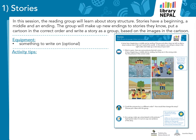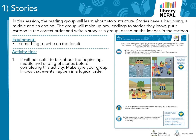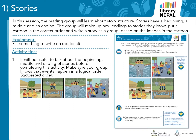Activity 1 is a pair activity. On the worksheet, there are four pictures. These pictures tell a story but they are in the wrong order. The pictures show a beginning, a middle and an ending to a story, and the pairs have to decide which is the correct order. To help your students, it will be useful to talk about the beginning, middle and ending of stories before completing this activity. Also, make sure your group knows that events happen in a logical order. The suggested order is shown on screen.